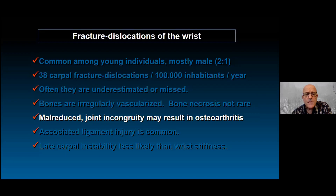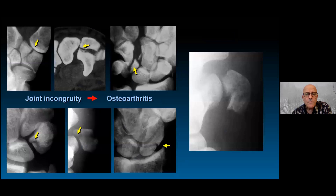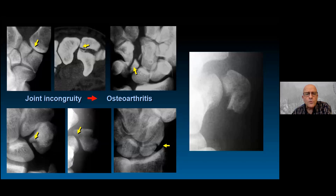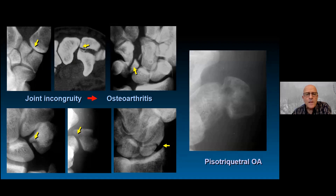Malreduction is not rare either, because joint incongruity may result in osteoarthritis. It's important to reduce all of those articular contacts. If you fail to produce a regular congruent articulation, you may have that osteoarthritis — for example, pisotriquetral osteoarthritis — leaving the patient desperate for pain relief when a good reduction could have been so simple.